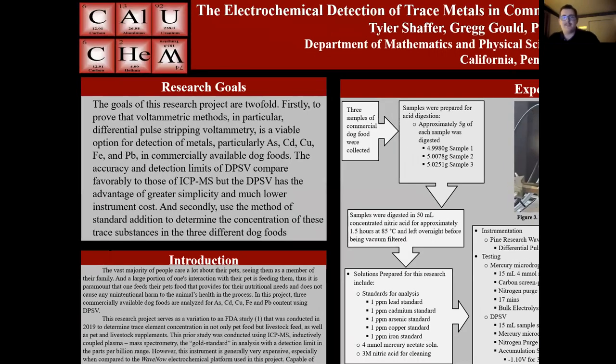The goals of this research project are twofold. First, to prove that voltammetric methods, differential pulse stripping voltammetry in particular, are viable methods for the detection of metals, particularly arsenic, cadmium, copper, iron, and lead in commercially available dog foods.